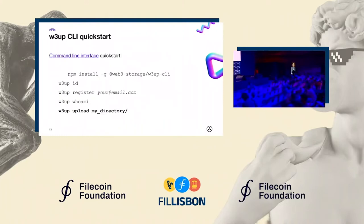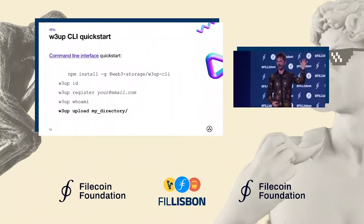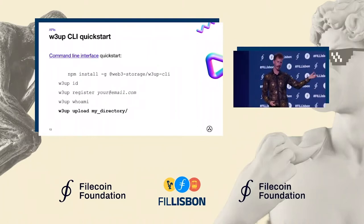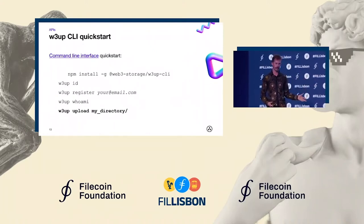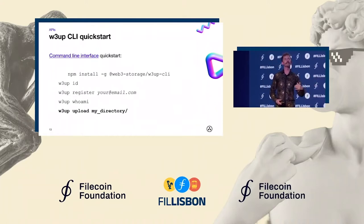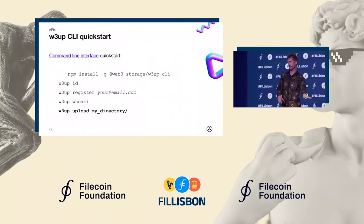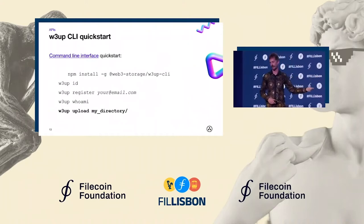Working with W3UP from the command line is just an easy npm install. The first step, w3up ID, generates local key material — a private and public key pair. w3up register shows how easy it is to work with these APIs: type it with your email address, it hangs on the command line, you get an email, click the link, and it completes. You'll see that same behavior in the web browser when using the components I'll talk about in a moment.